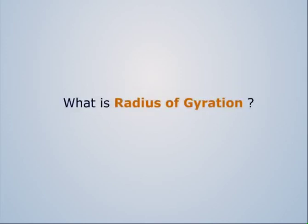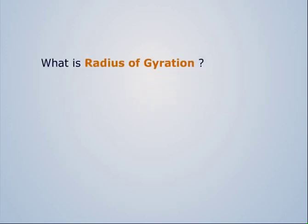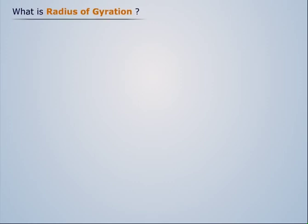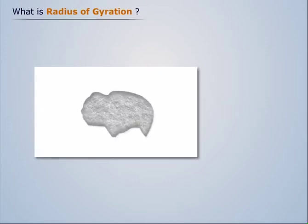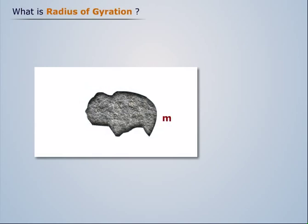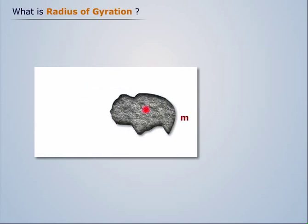What is radius of gyration? To understand radius of gyration, let us consider an object of mass M, which is at a distance R from the considered axis XX.